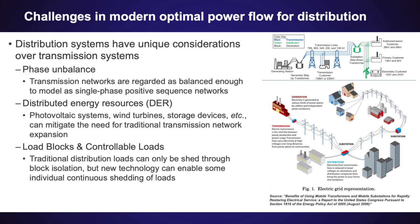While an optimization library for power systems of this type already existed — PowerModels.jl — PowerModels.jl is focused on transmission-level networks, and distribution-level networks have their own complexities that cannot be adequately captured by a transmission-focused library. The primary reason for this is due to the presence of what we call phase imbalance. While both high-voltage transmission-level and low-voltage distribution networks in reality have multiple phases, at the transmission level the powers and voltages across each of the phases are approximately the same — that is, they're balanced.